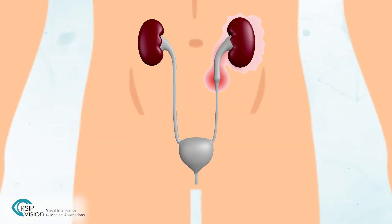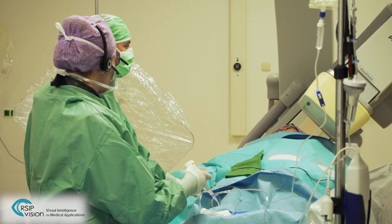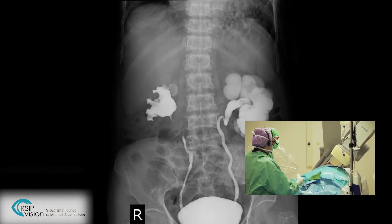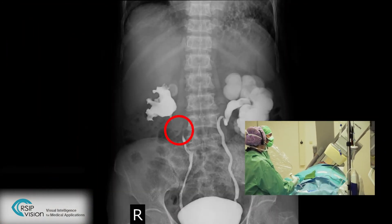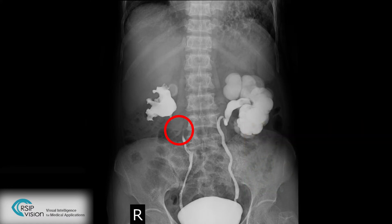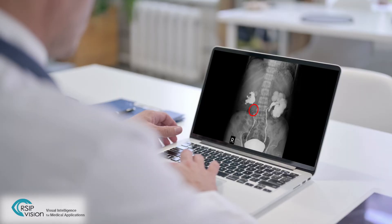Surgical reconstruction of the urinary tract is conducted when urine flow is disrupted. Fluoroscopy is often used during the procedure to assist in navigation and provides insights regarding the ureter location, integrity, and patency. However, it lacks the depth dimension, which can make orientation challenging.